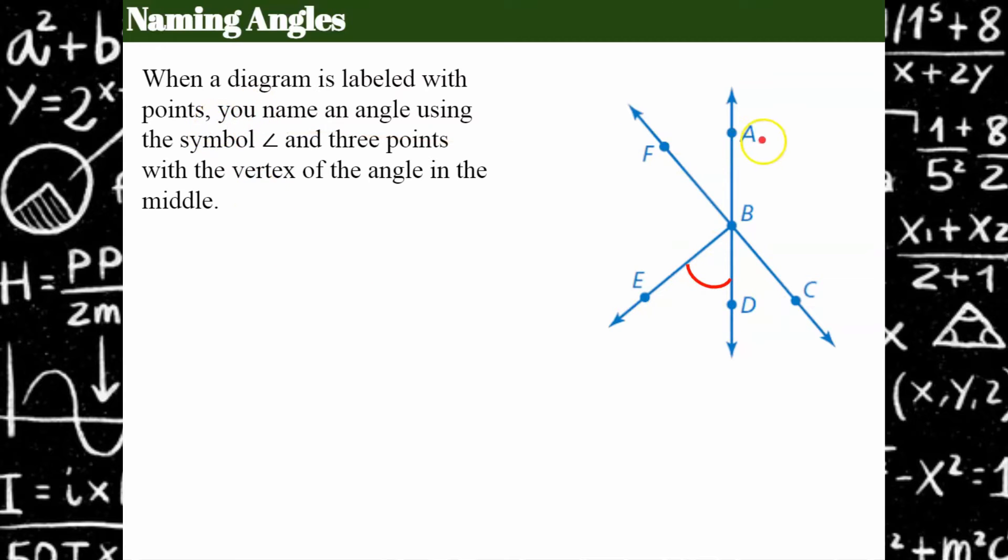So we have all these different points. So I can't just say that this is angle B, because angle B is the vertices, all the points in this diagram. So let's review how to do this, or maybe you've never even learned. We name an angle by using three points when it looks like this. And the vertex of the angle always has to be the middle letter.